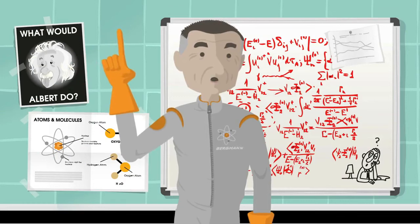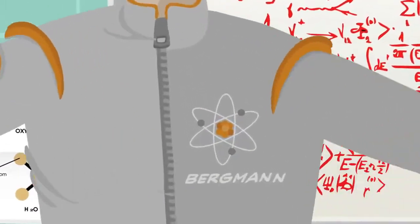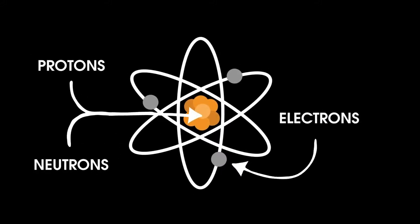You probably already know that everything is made up of little tiny things called atoms. You might even know that each atom is made up of even smaller particles called protons, neutrons, and electrons.